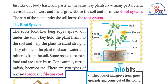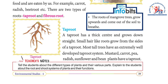The roots look like long ropes spread out under the soil. They hold the plant firmly to the soil and help the plant to stand straight. They also help the plant to absorb water and minerals from the soil. Some roots store extra food and are eaten by us — for example, carrot, radish, and beetroot.